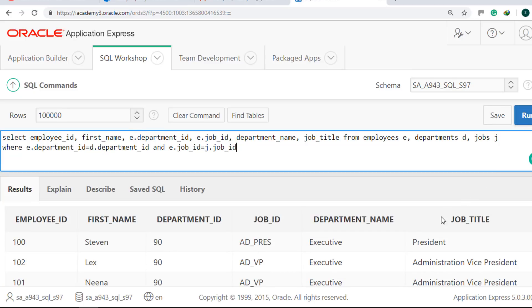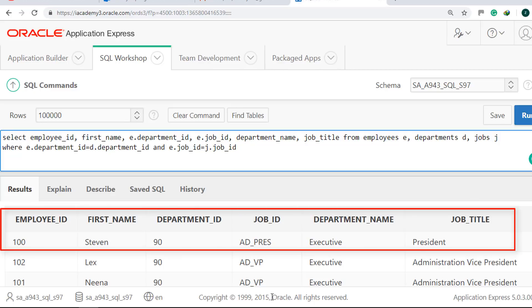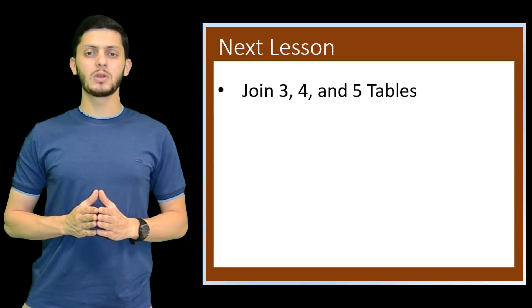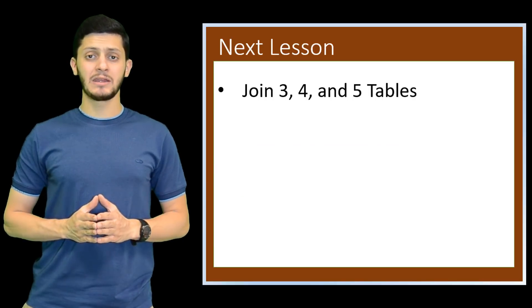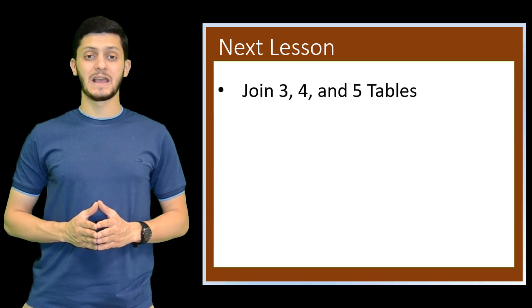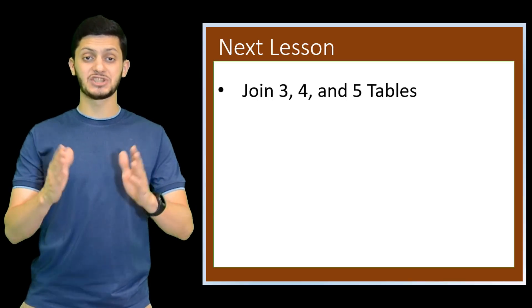We can see that Steven belonged to the executive department and his job title is President. In our next lesson, we will join three, four, and five tables. Thank you for your interest in this channel.